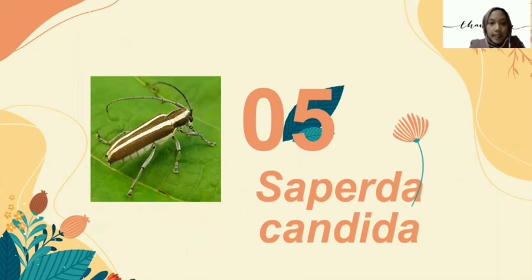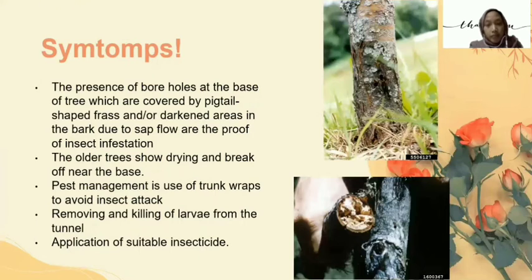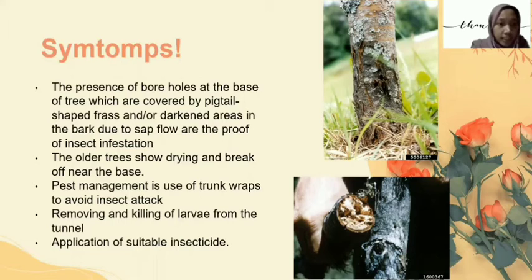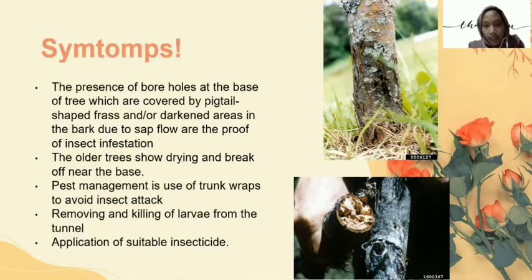The last pest is Saperda candida, the round-headed apple tree borer. Saperda candida is a species of beetle in the family Cerambycidae. The symptoms of Saperda candida attack include the presence of bore holes at the base of the tree which are covered by pigtail-shaped frass, and darkness areas in the bark due to sap flow as proof of insect infestation. Older trees show drying and break off near the base. Pest management includes wrapping the trunk to avoid insect attack, removing and killing larvae from the tunnel, and application of suitable insecticide.